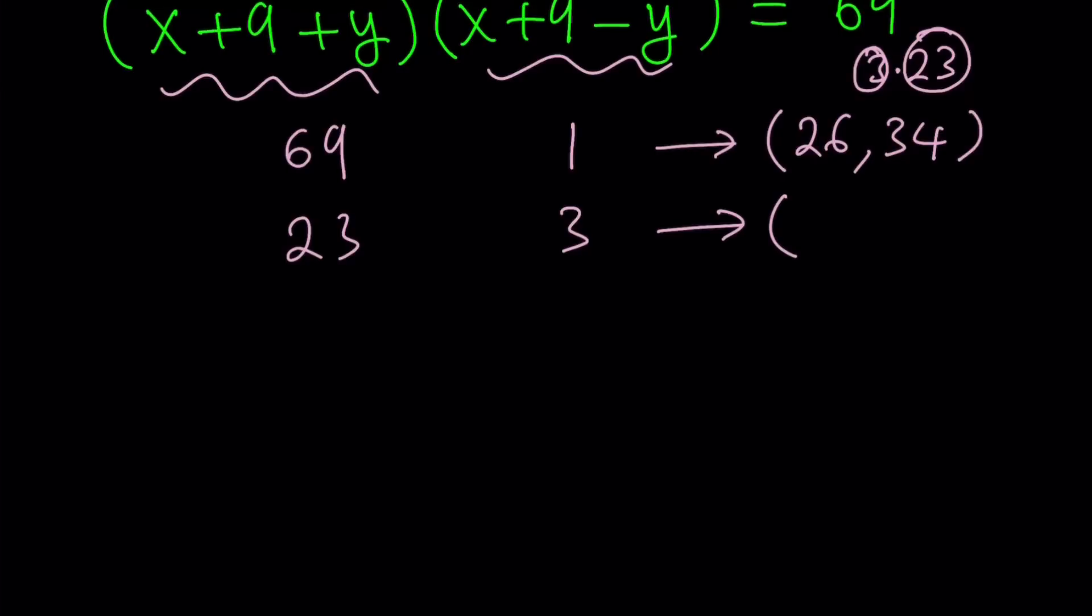I want to go systematically while decreasing the first factor and increasing the second factor. This is going to give us (4, 10). And then I have 3 and 23. Obviously, this can be switched.